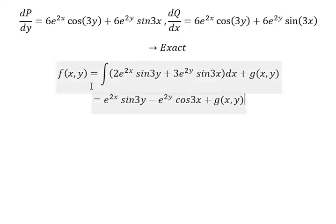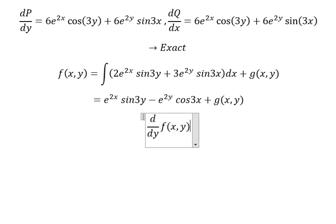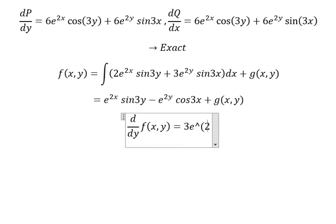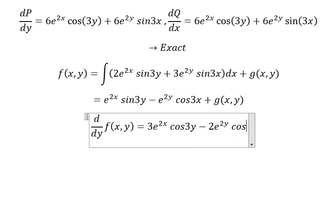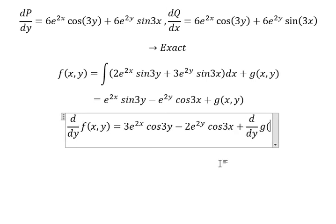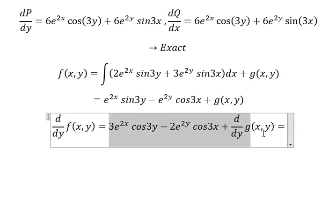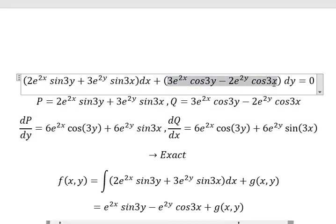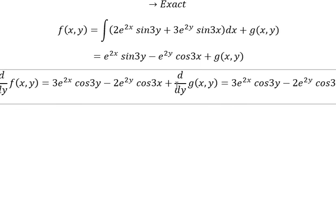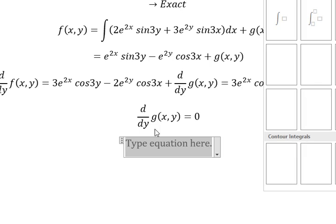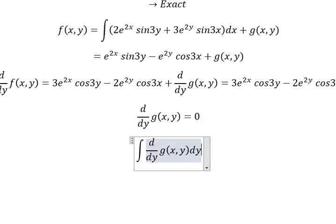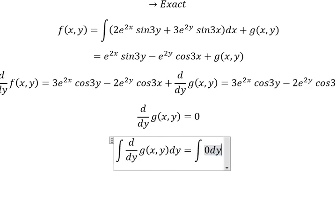Now we do the first derivative for both sides with respect to y. So this one we have 3cos(3y). This one we have 2e to the power of 2y, cos(3x). And we know that this one equals to this one. So if we simplify for both sides, this equals to number 0. Now we put the integration for both sides, and we have c.